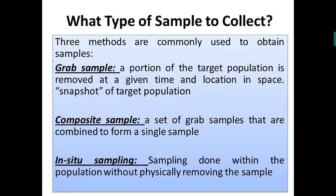All these sampling procedures — random sampling, systematic sampling, judgmental sampling, systematic judgmental sampling, stratified sampling, and convenience sampling — answer the question of where to collect the sample from the target population. The next question of sample design criteria is: what type of sample to be collected?